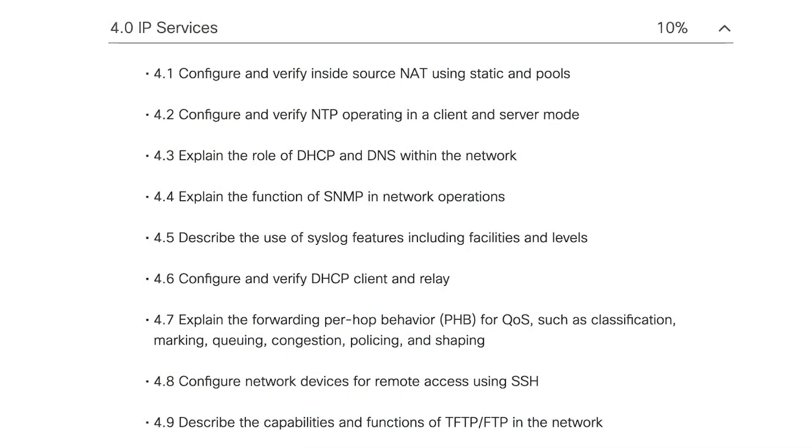DNS and DHCP fall under task 4.3 — they're such critical services and they go hand in hand. If you configure a DHCP pool or DHCP server, usually you'll get the DNS information at the same time. The other one you should all be familiar with is NAT, task 4.1. You've got internet at home with a broadband router from your service provider — it's doing some sort of NAT, allowing your devices at home to connect to the internet, translating private addresses to public addresses.